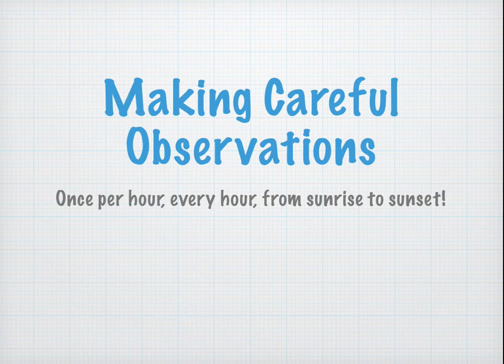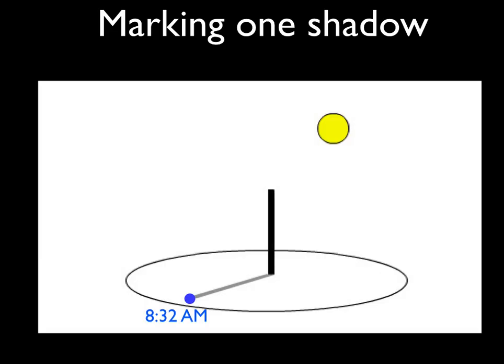Making careful observations: you're going to mark the shadow once per hour, every hour, from sunrise to sunset. To mark one shadow, just mark a dot with a pencil or pen. It's probably best to put the time next to the mark. This will help in your later analysis if you want to see if there's a pattern of the times.